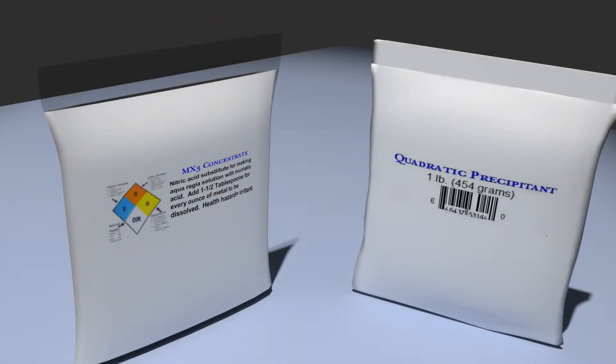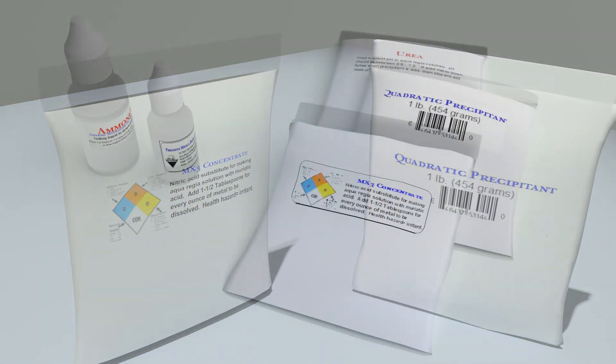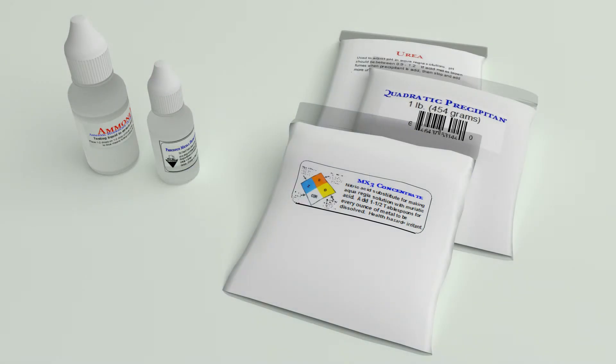These safe substitutes, MX-3 and quadratic precipitant, are utilized in this kit. Just follow these simple video instructions and you will refine your gold to 99.95% with no losses, even the first time you use this process.